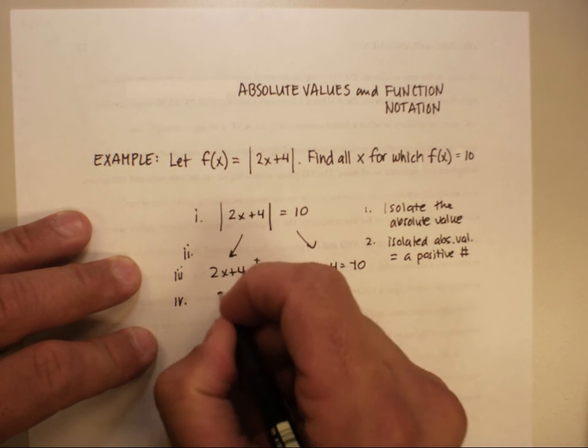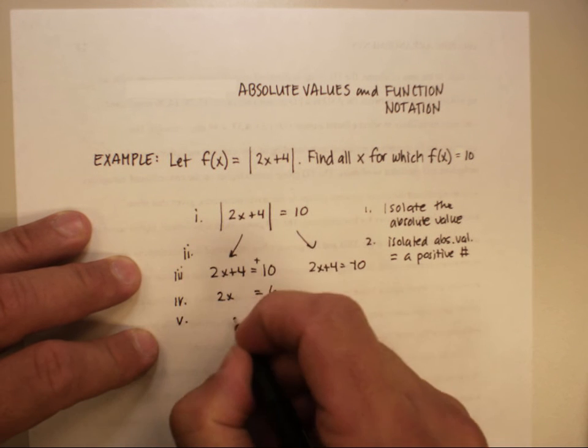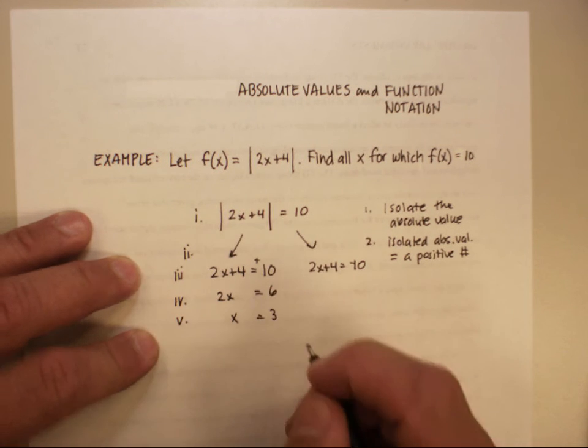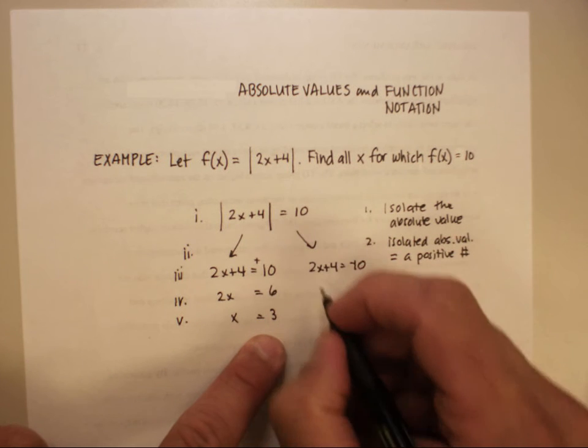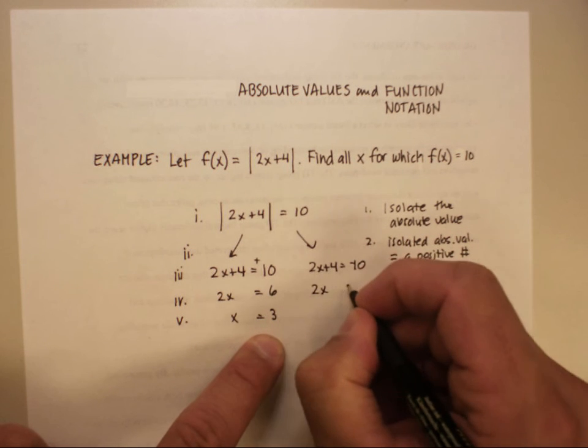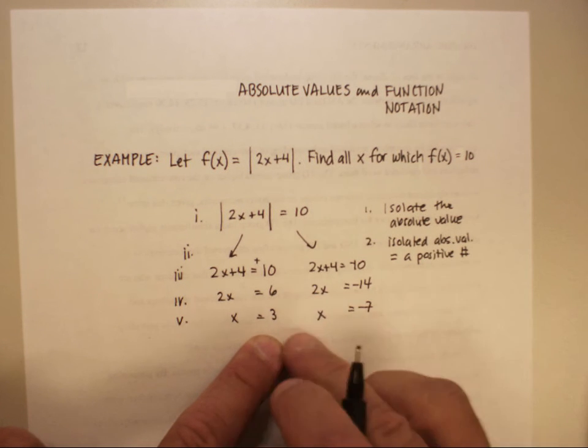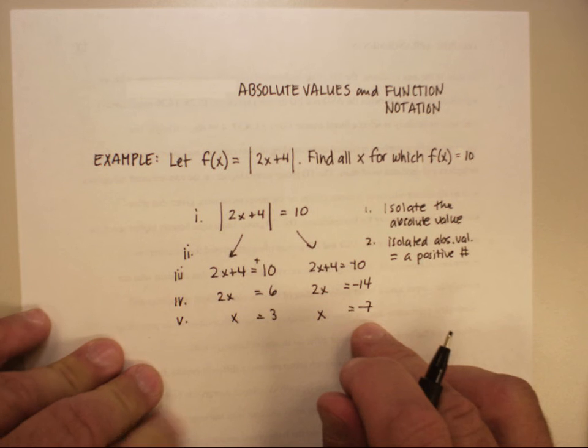So I'm going to subtract 4 from both sides, and divide by 2. So I get x is equal to 3. Let's do the same thing over here. I'm going to subtract 4 from both sides, and divide by 2. And I get x is equal to negative 7.